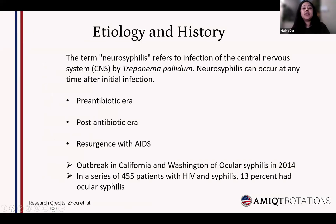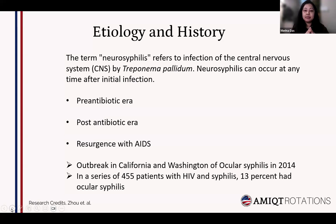As the name signifies, neurosyphilis refers to infection of the central nervous system — mainly the brain and spinal cord — and it is caused by Treponema pallidum, which is a spirochete. This can occur anytime after the initial infection: maybe weeks, months, or years.